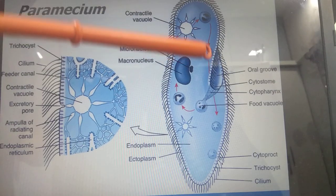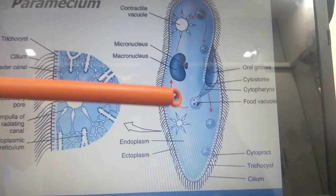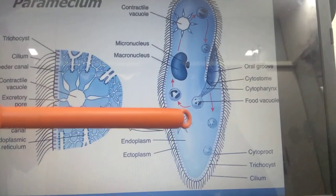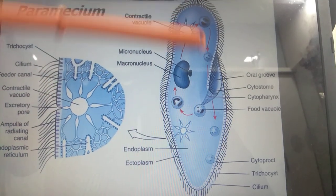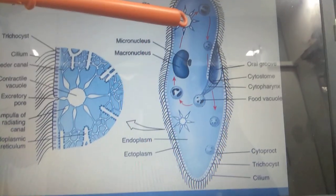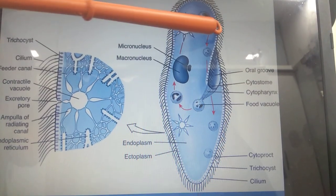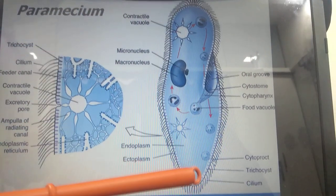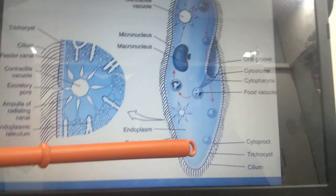The inner part is called endoplasm, which consists of many important structures. First, two vesicles are present at its two ends. The first vesicle is surrounded by 8 to 10 radiating canals, and the second vesicle is also surrounded by 8 to 10 radiating canals.